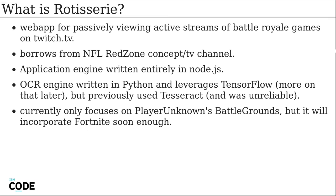This project is called Rotisserie. It's a web app for passively viewing streams on Twitch, most notably for the game PlayerUnknown's Battlegrounds. We will be porting to Fortnite at some point very soon. It borrows from the NFL Red Zone concept. The application engine is written entirely in Node.js. The object character recognition engine is written in Python and uses TensorFlow for the machine learning. We previously used Tesseract, which is as old as time itself — it was pretty unreliable, but good for our proof of concept.